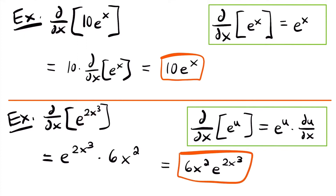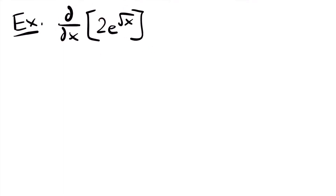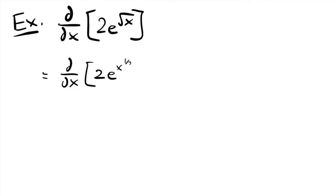Let's look at some more examples. Here we want to find the derivative of 2 times e to the power of the square root of x. We're going to need to use the chain rule because we have a function other than x as our exponent of e. What I'm going to do first is rewrite this function so that the square root of x is x to the 1/2 power, because taking x to the 1/2 power is the same as taking the square root. So we'll have the derivative of 2 times e to the power of x to the 1/2.